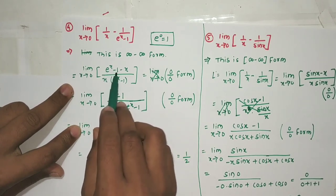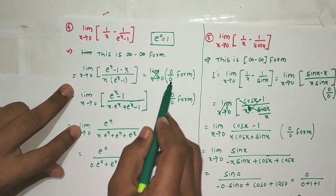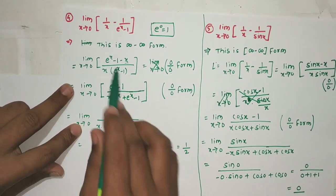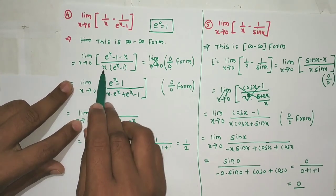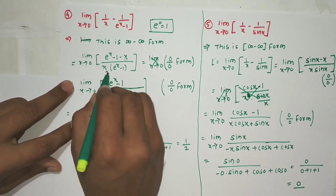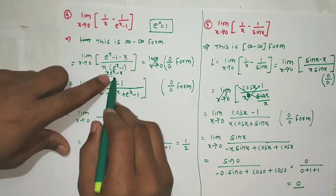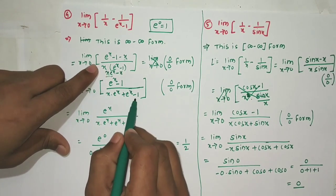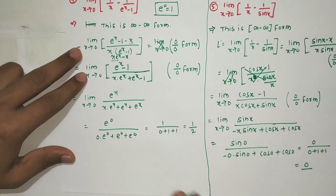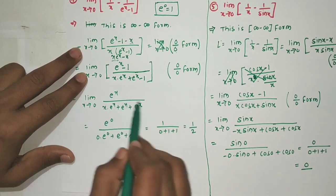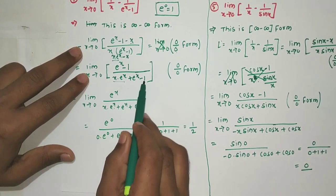Applying L'Hôpital's rule: derivative of (eˣ - 1 - x) is eˣ - 1. Derivative of the denominator x·(eˣ - 1) by product rule is x·eˣ + (eˣ - 1). Putting x=0: numerator = e⁰ - 1 = 0; denominator = 0·1 + 0 = 0. Still 0/0 form, so we apply L'Hôpital's rule again.